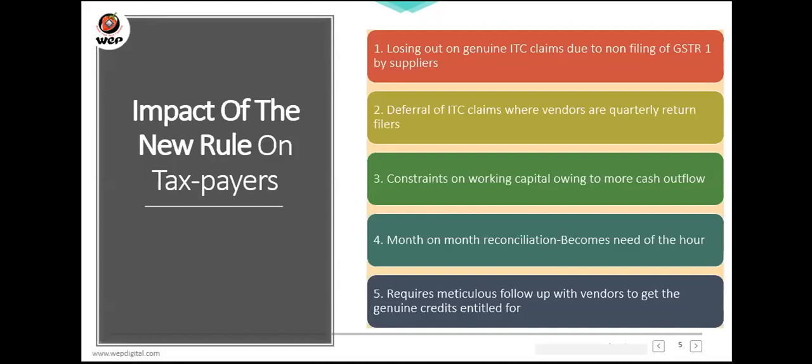Question: if my GSTR 2A shows a credit of 10,000 and my books show a credit of 11,000, can I claim 11,000? You calculate 120% of 10,000 from 2A, then compare with your books value of 11,000 — whichever is lower, you can claim that. If there is a credit of 2,000 rupees which your supplier has not uploaded and it falls within the 120% buffer, you can claim that amount.